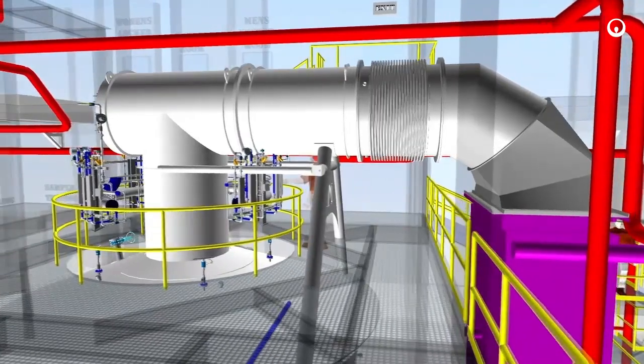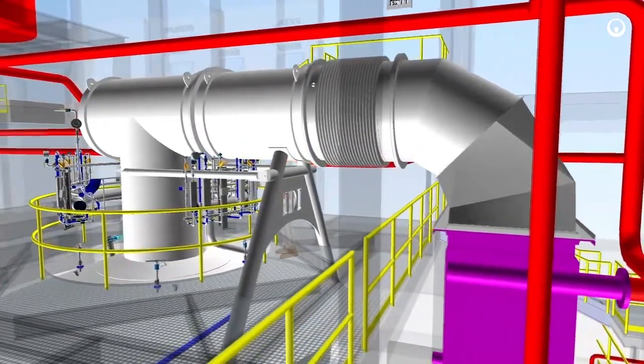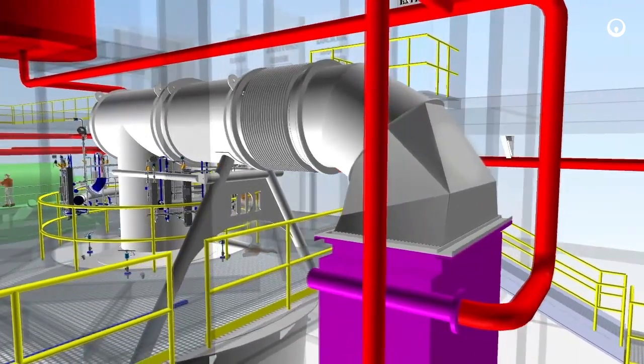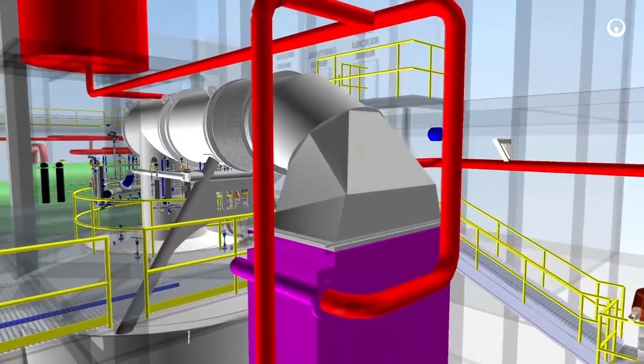Hot flue gas from the reactor first passes through the thermal oil economizer for energy recovery. Enough heat is recovered from flue gas via the circulating thermal oil to thermally support the thermal system.